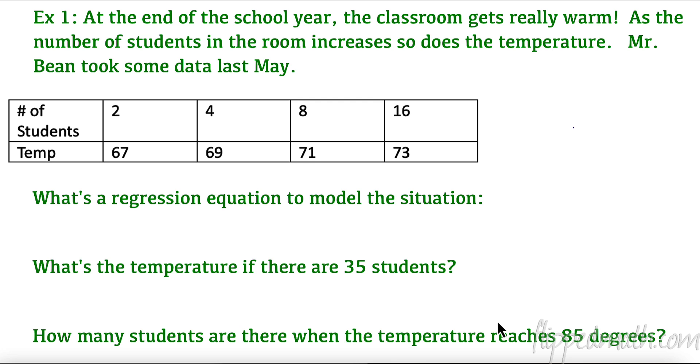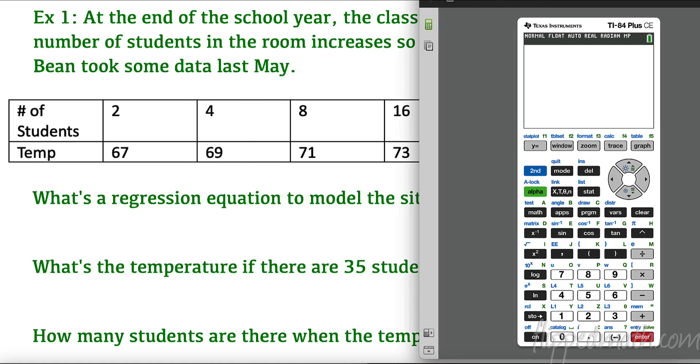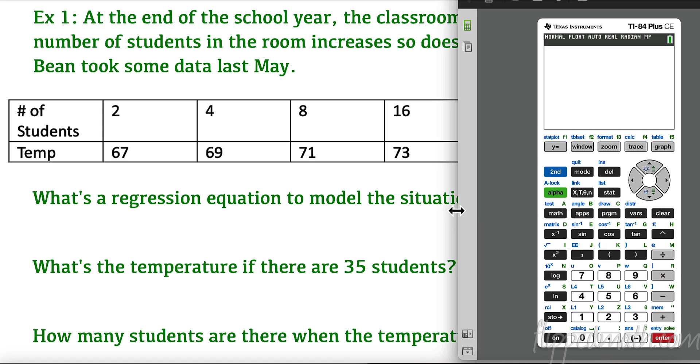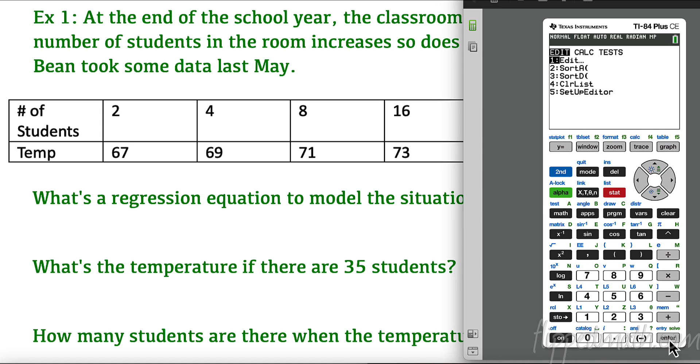We're going to put that into our calculator. Hopefully by now you're getting pretty good at these regressions. Let's take a look. We're going to go to stat, we have to edit. In L1 we're putting our list of x, our number of students, so I'm going to put 2 enter, 4 enter, 8 enter, and 16 enter. My y values are going to be 67, 69, 71, and 73. This goes up proportionally or a little bit faster each time, this goes up at a more consistent or constant rate. That's a dead giveaway that it's going to be logarithmic.